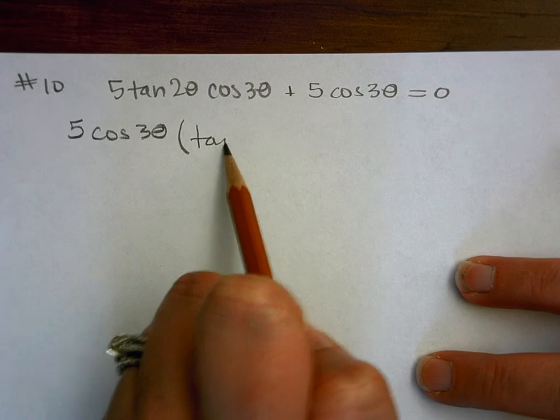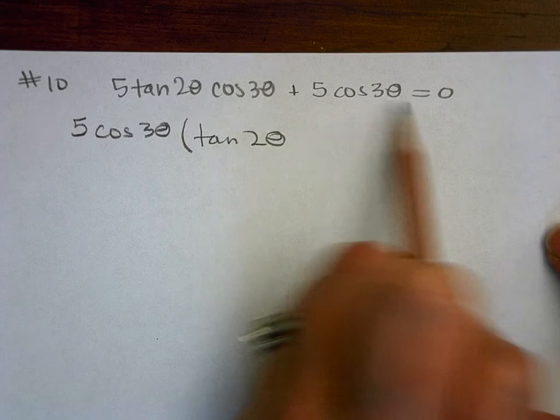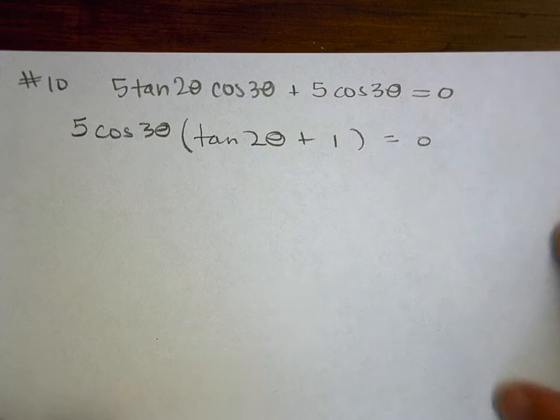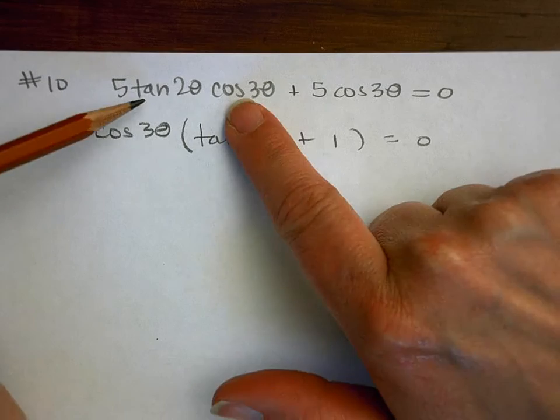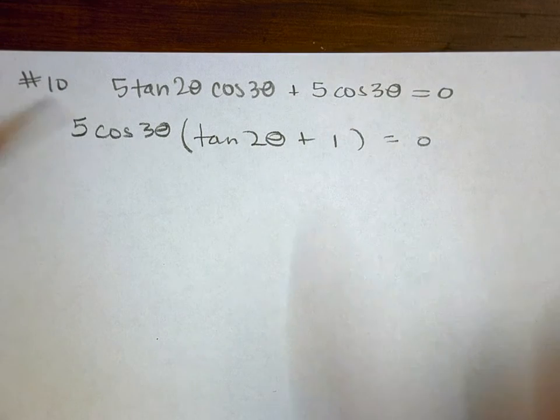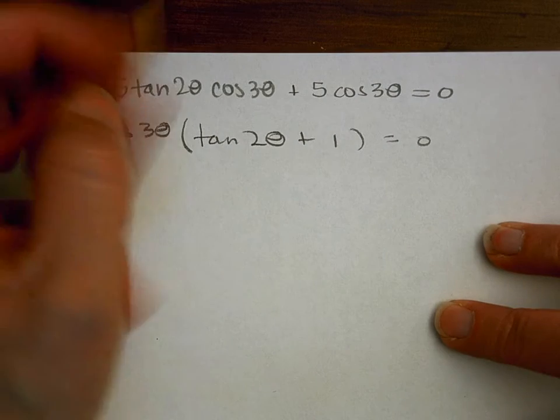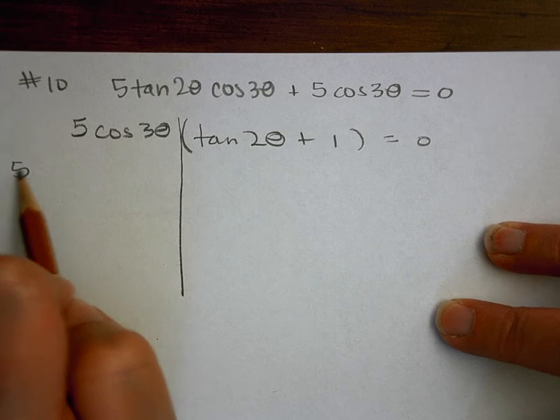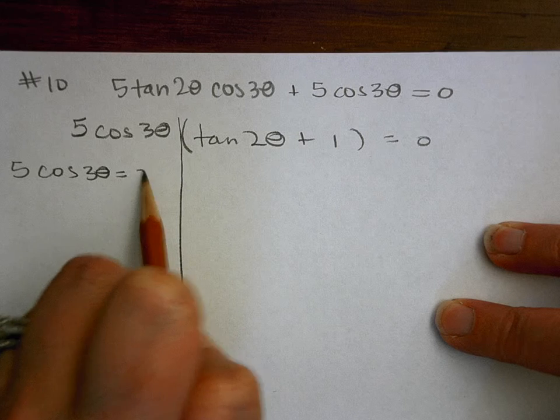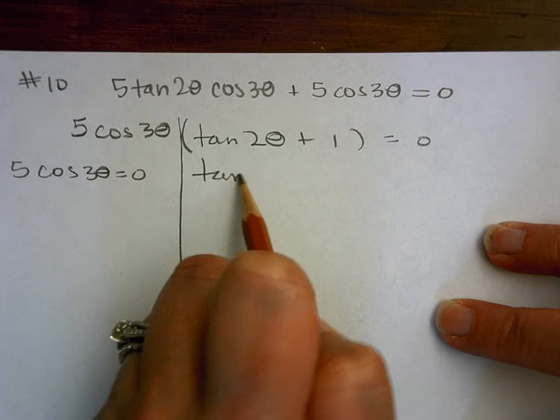So I'm going to factor out the 5 cosine 3 theta. So when I factor out of here, I'm left with tangent of 2 theta, and out of here I'm left with 1. And just distribute that real quick and make sure you get the same thing. So when I multiply these two together I would get that, when I multiply those two together I would get that. So then I use zero product property, so I'm going to set that factor equal to 0 and then this factor equal to 0.